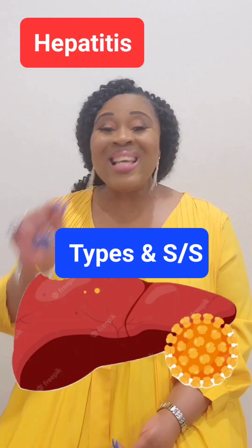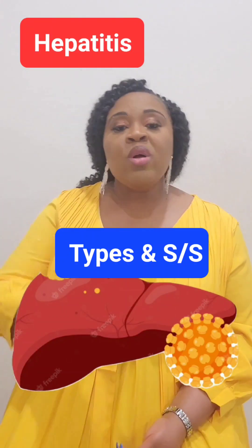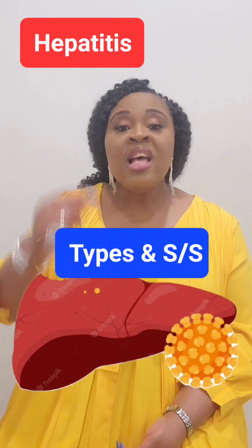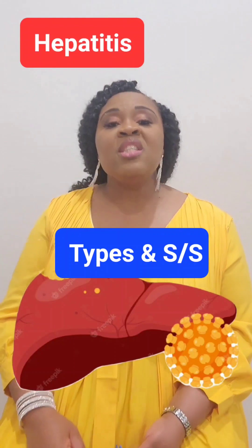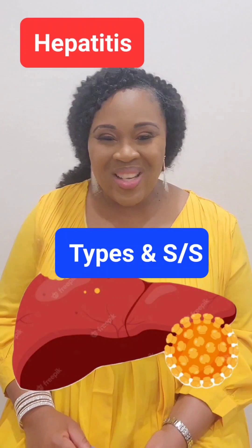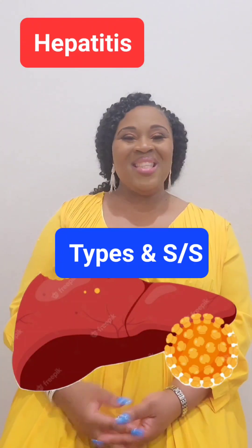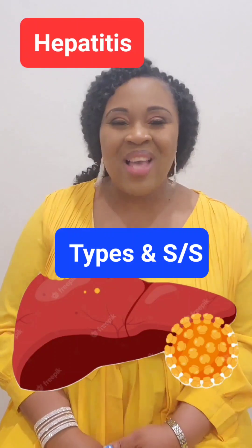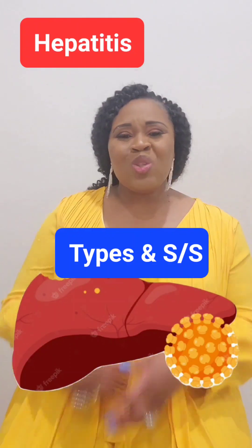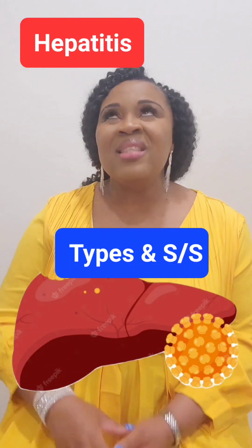We talk about hepatitis B — we know this one. It's caused by the hepatitis B virus, and it can be prevented by vaccination. If you work at a hospital, they advise you to get the hepatitis B vaccine because the disease doesn't get cured, but it can be prevented. How do you get hepatitis B? You get it through exposure to contaminated body fluids — that is the only way you can get it.